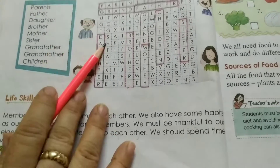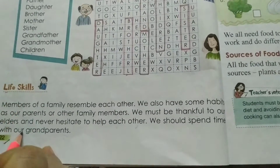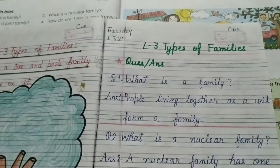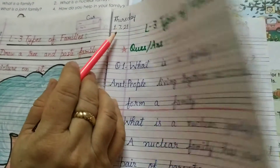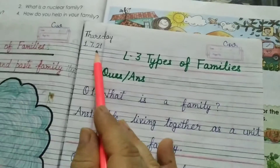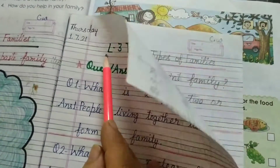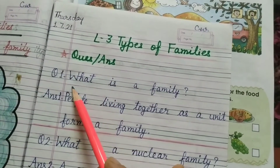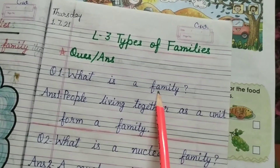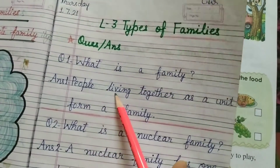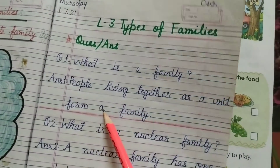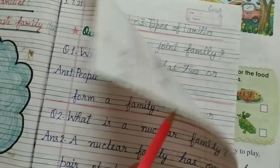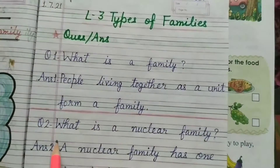तो इस exercise को आपने complete करना है बुक में, और इस life skill को read करना है। Next notebook में देखिए क्या classwork है — Thursday, Date 1-7-21, and classwork, Lesson 3: Types of Families. Question answer: What is a family? Family क्या है? Answer 1 — People living together as a unit form a family. जब लोग साथ साथ एक unit form में रहते हैं, तो उसे एक परिवार कहते हैं।